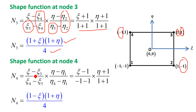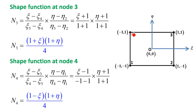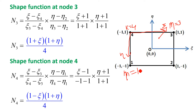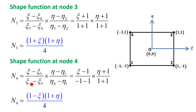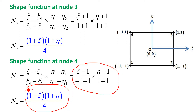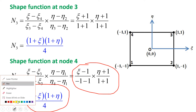For node number 4, the horizontal edge represents the xi coordinate and the vertical edge represents the eta coordinate connecting at node 4. So k equals 4, m equals 3 for the xi coordinate, and m equals 1 for the eta coordinate. Substituting xi_3, xi_4, eta_1, and eta_4 gives the shape function N4 equals (1 minus xi)(1 plus eta) upon 4. These are the four shape functions of the four-noded rectangular element.